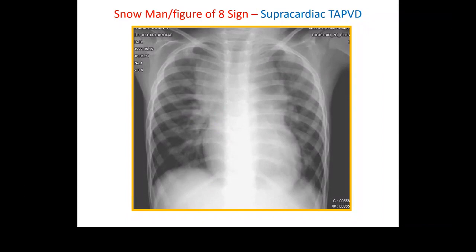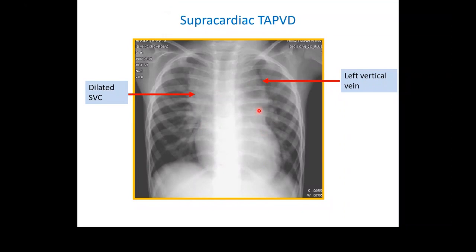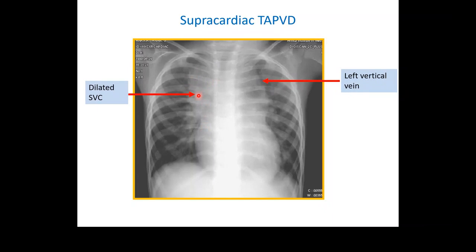In supracardiac TAPVD, the real heart forms one part of the figure of eight. A vertical vein carries all the pulmonary veins anomalously up, joining the innominate vein and coming down via the right SVC, which is dilated — forming the margins of the figure of eight. This is also called the snowman sign.